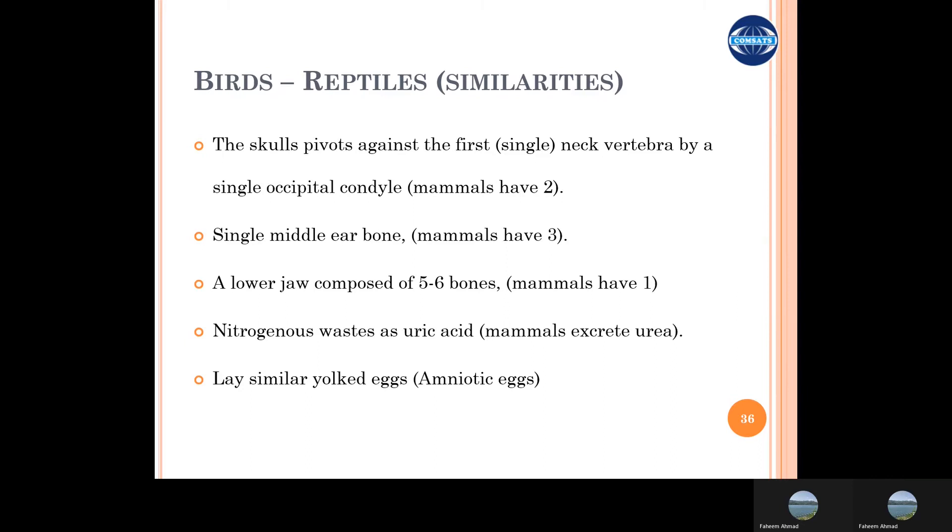The lower jaw composed of five to six bones in the birds and the reptiles, so hence we can consider that birds and reptiles have the same evolutionary lineage. However, mammals are different than these two animals and these mammals have only one bone in their lower jaw.